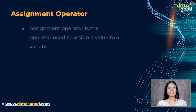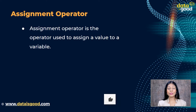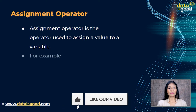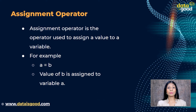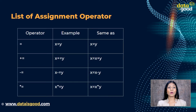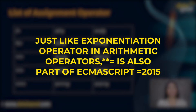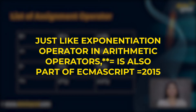In easy words, an assignment operator is the operator that is used to assign a value to a variable. For example, a equal to b — the value of b is assigned to variable a. This table on your screen has a list of assignment operators with examples, and the last column includes similar expressions. Just like the exponentiation operator in arithmetic operators, star-star equal to is also part of ECMAScript 2015.